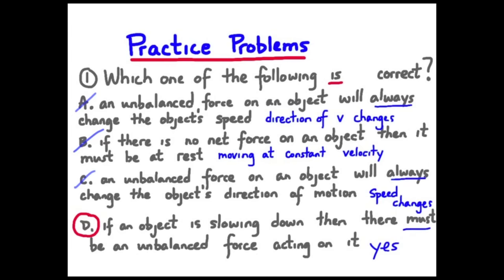So that leaves D, and of course, D it is. If an object is slowing down, then of course, it is accelerating. Its velocity is changing, and therefore, there must be an unbalanced force acting on it. Newton's first law.